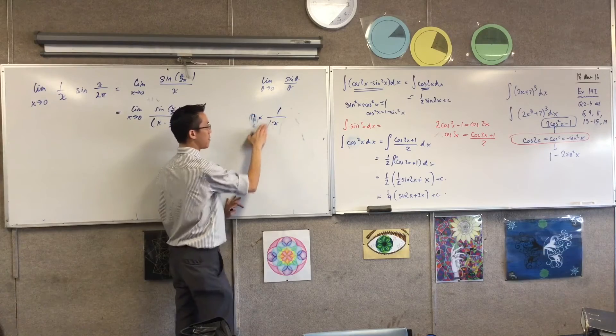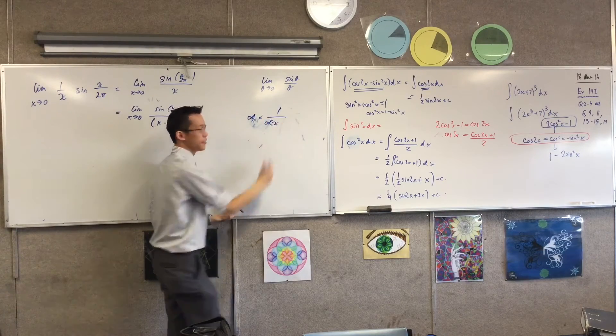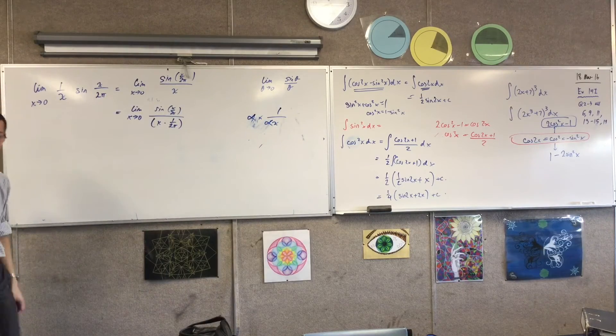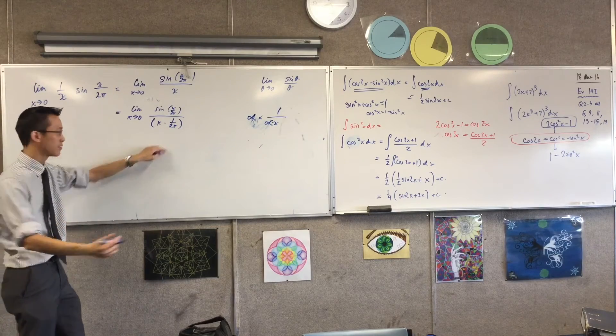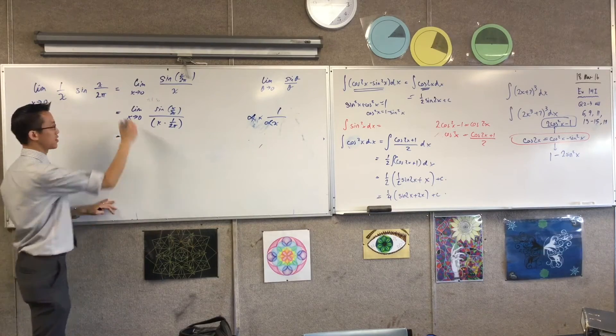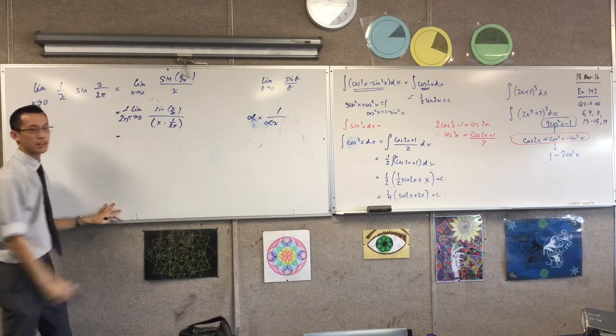So if I had to multiply by any number, like say alpha, then it's going to appear both times. Does that make sense? Now what I've multiplied by is a fraction, so therefore the same fraction is going to have to appear out the front.